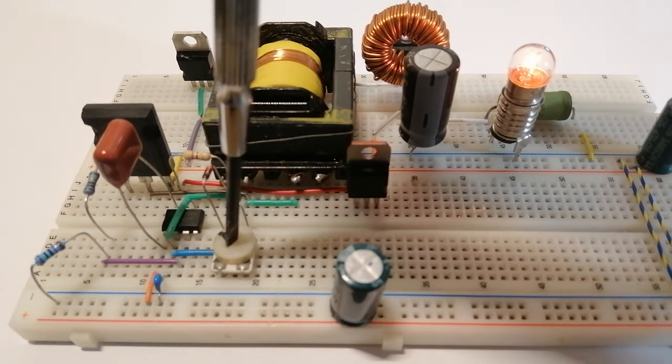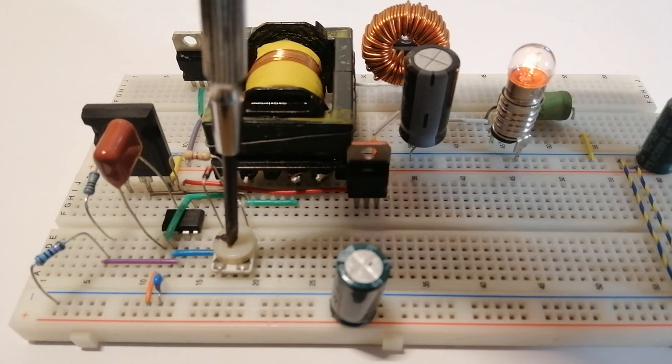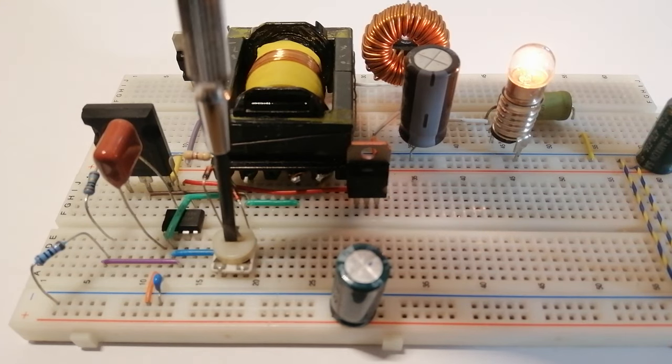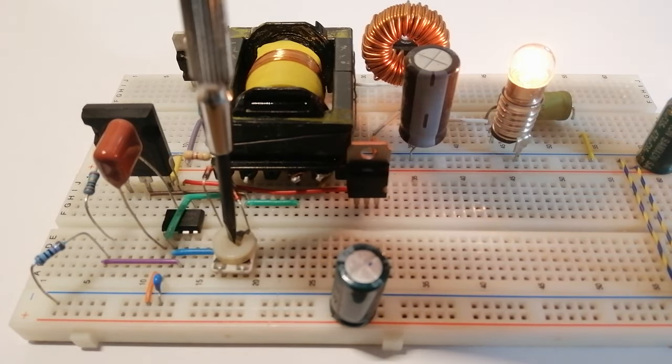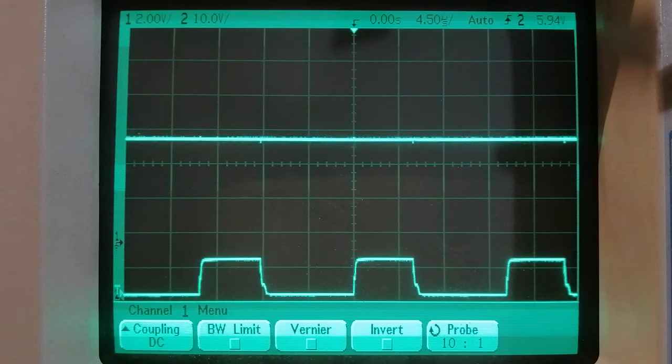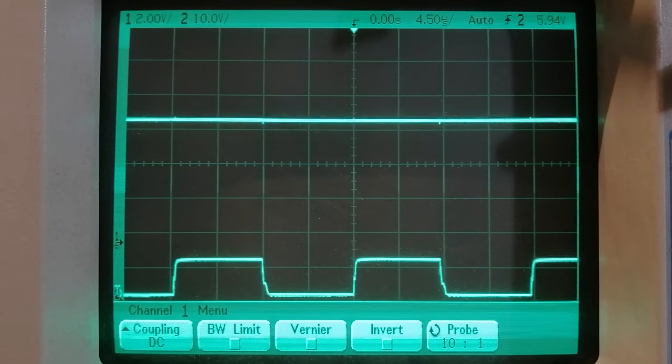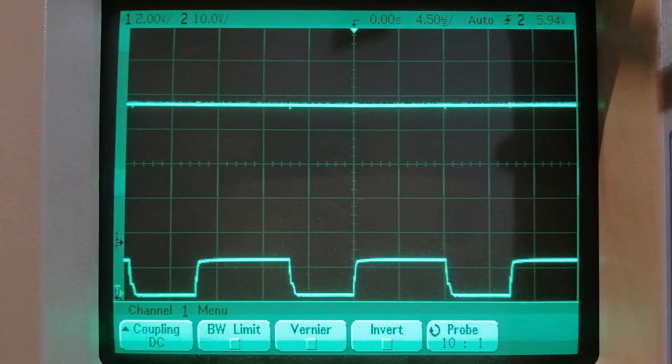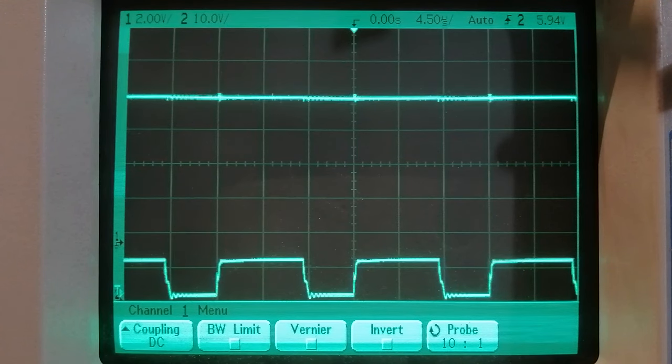Here if I turn the potentiometer and change the duty cycle increasing it we can see that the light is brighter. And looking at the oscilloscope we can see at the bottom the clock signal and at the top the output voltage with a pretty low noise and we can see that the voltage rises.